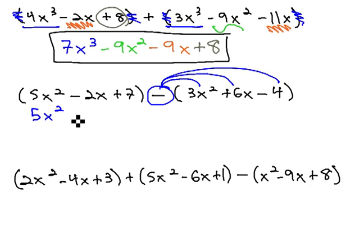The first polynomial is still the same, 5x² minus 2x plus 7, but after distributing the negative through, we now have negative 3x², negative 6x, and positive 4.